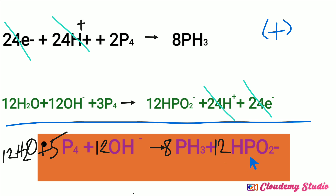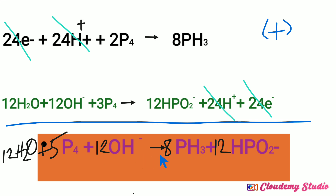In basic medium, we normally need to add hydroxide ions to both sides of the resultant equation — but only if hydrogen ions are present. When we check here, there are no hydrogen ions in the resultant equation, so we do not need to add hydroxide ions. Therefore, the final equation is: 5 moles of phosphorus + 12 moles of hydroxide + 12 moles of water → 8 moles of phosphine + 12 moles of hydrogen phosphite ions.